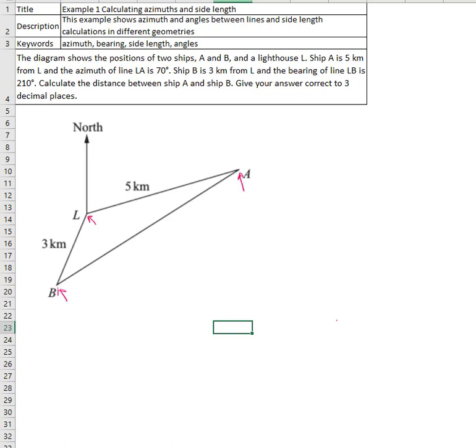We have ship A is five kilometers from the lighthouse and ship B is three kilometers from the lighthouse. The azimuth of the line LA, which is the direction of ship A from the lighthouse, is 70 degrees, while the azimuth of the line LB, which is the direction of ship B from the lighthouse, is 210 degrees. What is required is to find the distance between ships A and B.